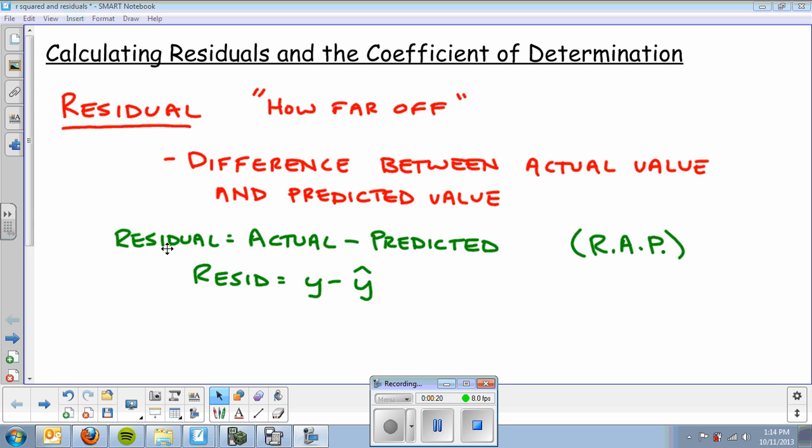By definition, it is the difference between the actual value and predicted value. The formula is residual equals actual minus predicted. I call that the residual RAP, an acronym to help you remember the order: R-A-P. The formula is resid equals y minus y hat. Remember, the little hat above the y means it's a predicted y, not the actual y, but what the line or linear model predicts given any x.